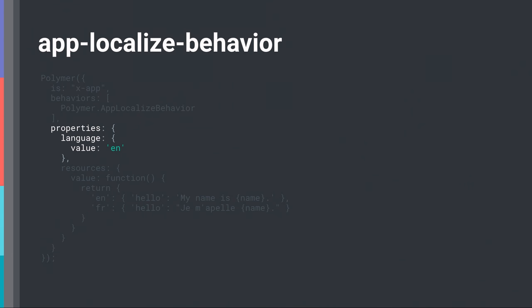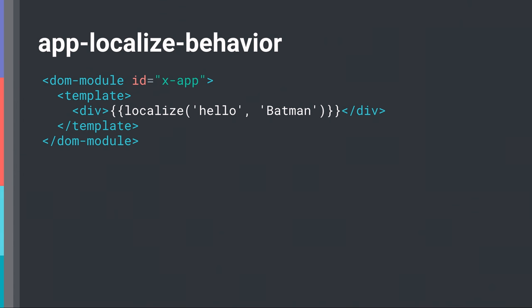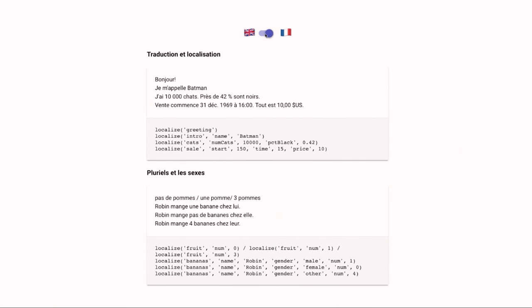You could very easily bind to the language property to dynamically switch it. The resources property can be statically defined, fetched off the network, or held globally on your window object. To use these resources to localize the component, anywhere you have a string, instead of that static string you bind to a localized function, passing it a key and any variables that need to be in that string. With this you can translate simple strings with string replacement, but you can also localize currencies, numbers, and dates. It even supports plurals and genders — a very simple tool that uses the platform to elegantly solve very complex use cases.